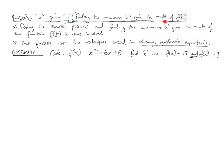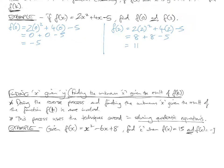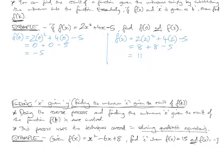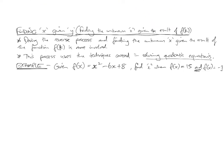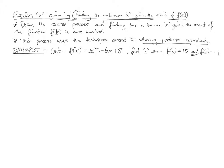So finding x given y. Finding the unknown x given the result of f of k. So doing the reverse process of what we just did above, finding the unknown given the result of the function, f of k is more involved. So essentially what you're doing in this process is, let's say you know that the f of something is 11, you're trying to find the something, or the somethings, because remember quadratic can have more than one solution.